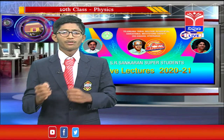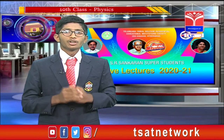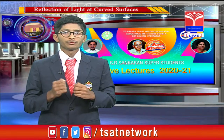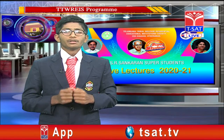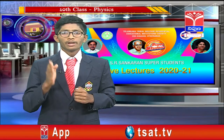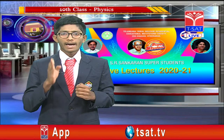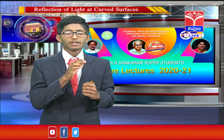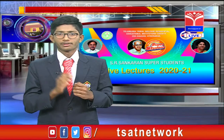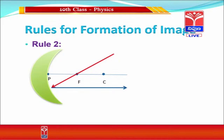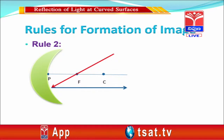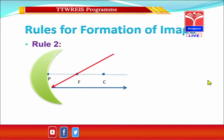How do we form these images? In order to form images, we need to follow some rules. Rule one states that when a ray moves parallel to the principal axis, on reflection it will pass through the focal point. Rule two states that when a ray passes through the focal point, on reflection it will travel parallel to the principal axis.